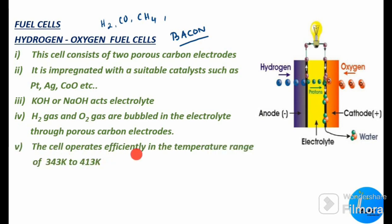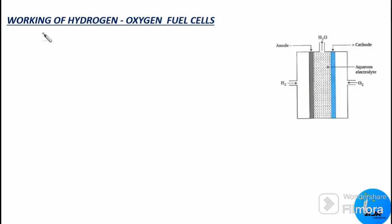The cell operates efficiently in the temperature range of 343 K to 413 K, that is 70°C to 140°C, and provides a potential of about 0.9 volts. Hydrogen and oxygen are continuously fed into the cell under a pressure of about 50 atmospheric pressure, and these two gases diffuse through the electrode pores along with the electrolytic solution.